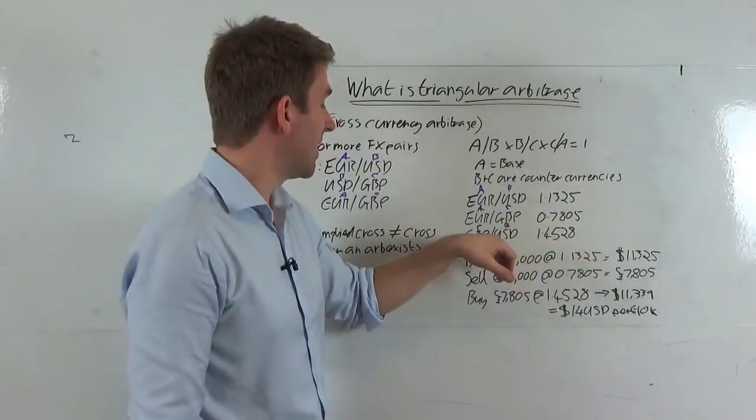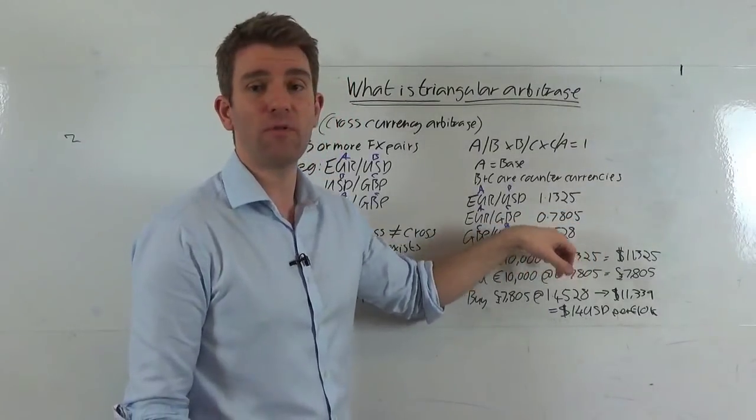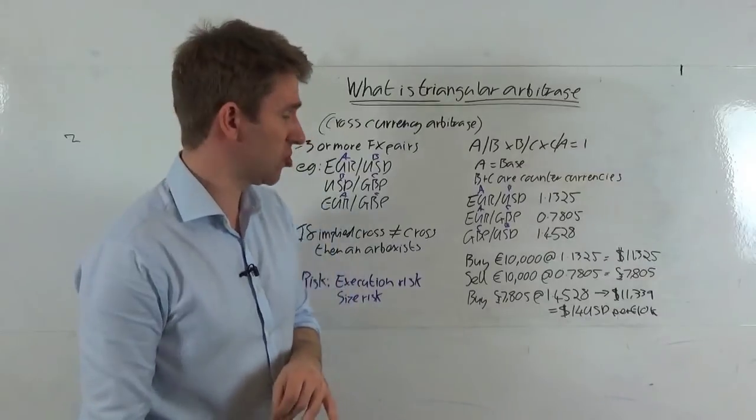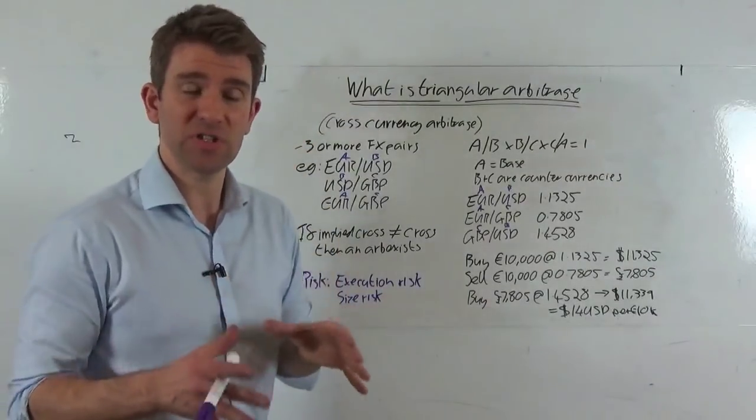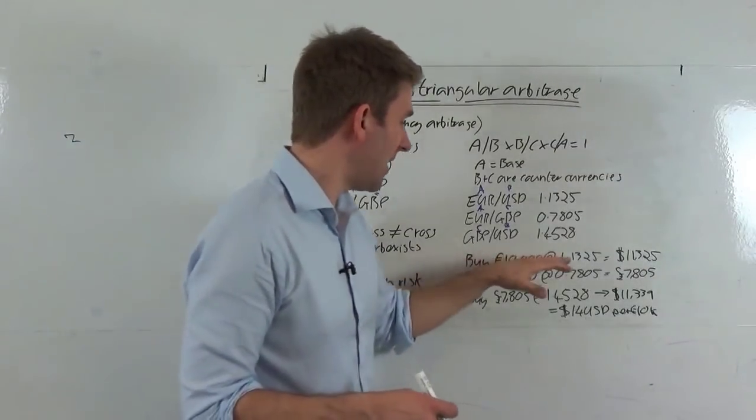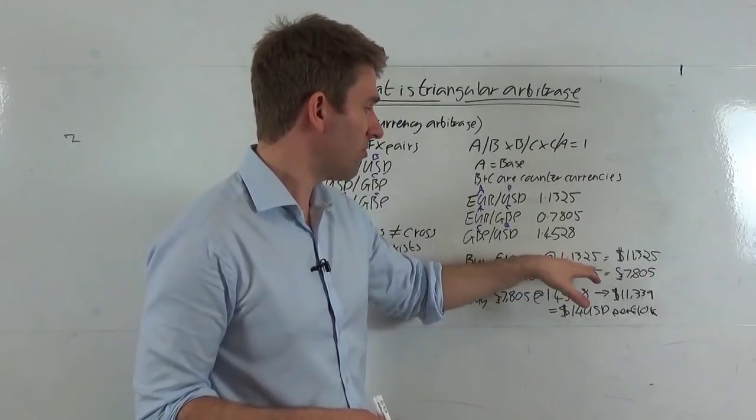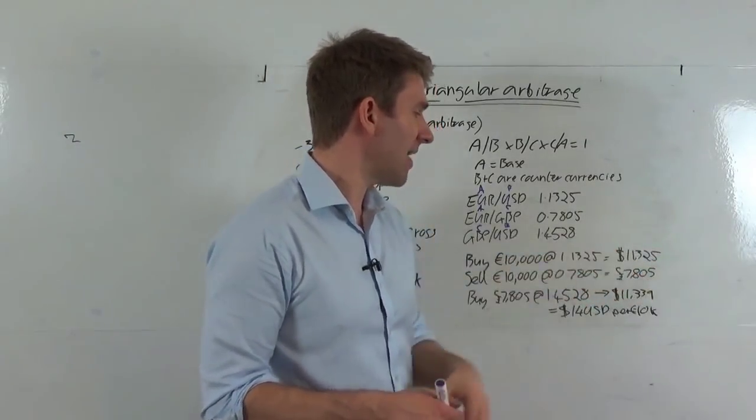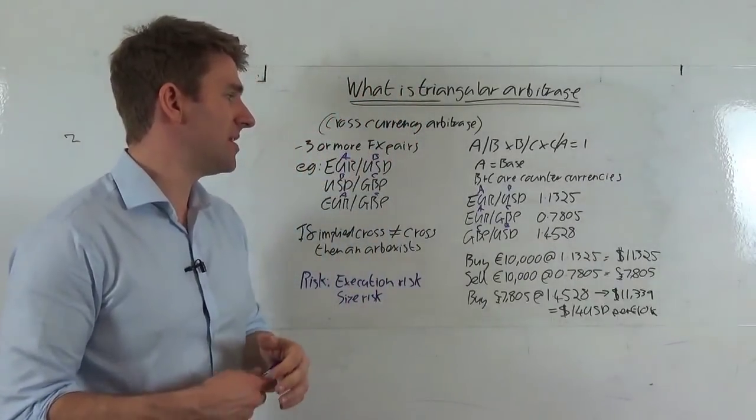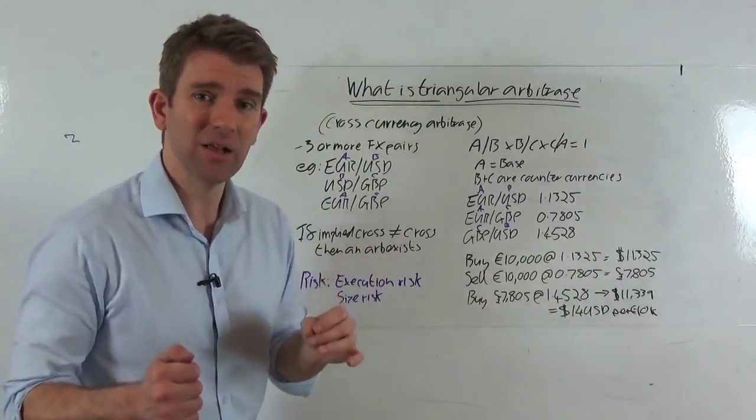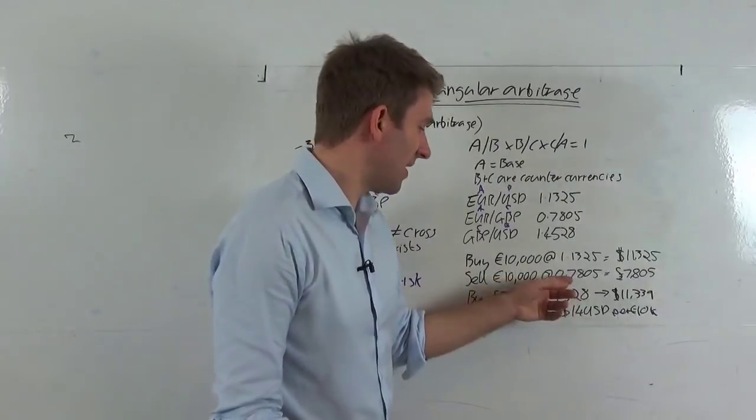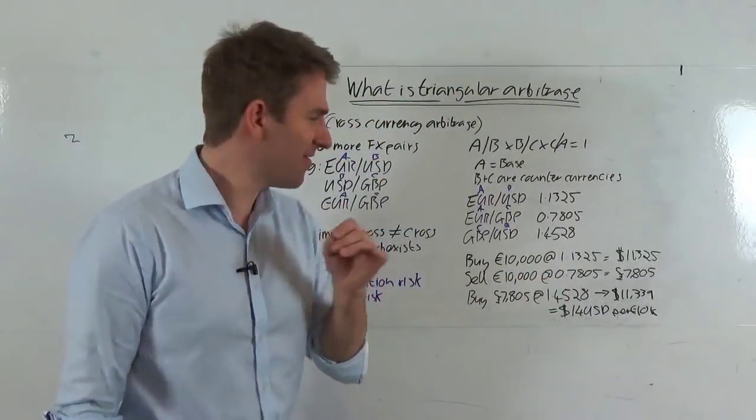So we go out, we are 10,000 euros and we would buy 10,000 euros at 1.1325 for $11,325. We then sell 10,000 euros at 0.7805 to get £7,805.